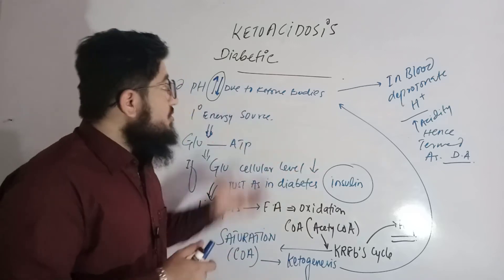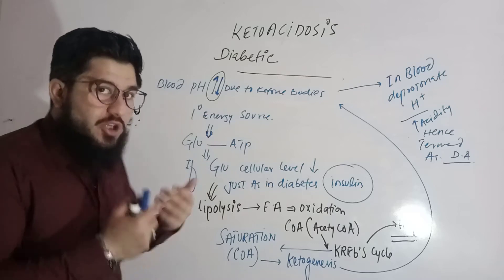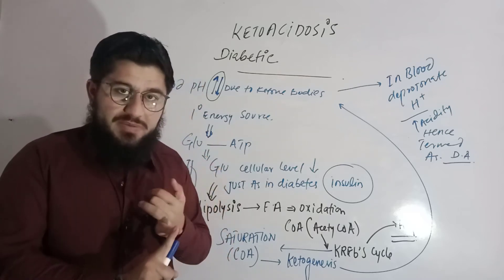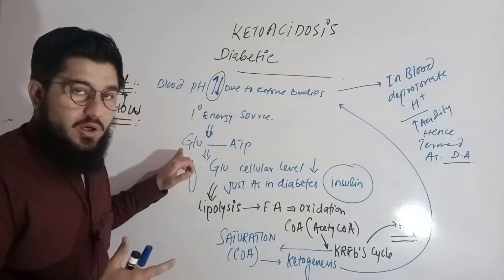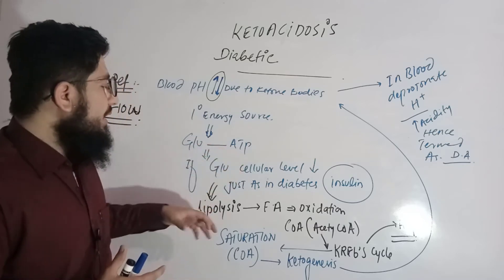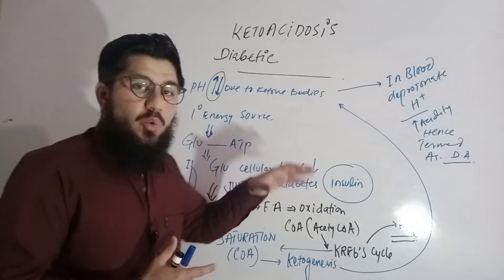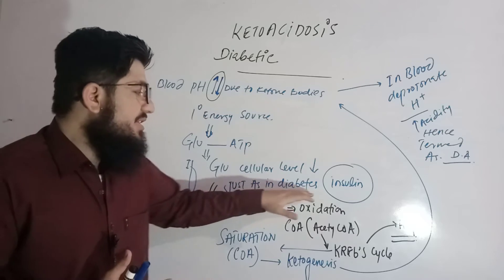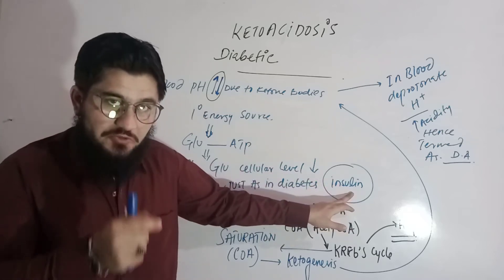What is the pathophysiology of diabetic ketoacidosis? The primary energy source we consume for cellular metabolism is glucose, used to synthesize ATP. In diabetes, glucose in the cell will decrease. Why? Because in diabetes there is no insulin — there is a deficiency of insulin.